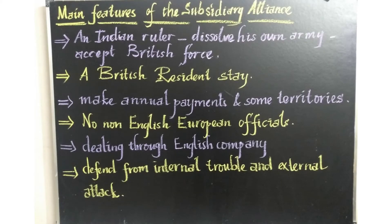Let us see the main features of the Subsidiary Alliance introduced by Lord Wellesley to bring all the princely states under British control. The first feature: any Indian ruler who wanted to join under this alliance had to dissolve their own armed forces and accept British forces in their state. A British resident would stay in the capital of that empire. The Indian ruler had to pay for all maintenance charges of the army, make annual payments to the company, and some territories had to be permanently given to the company.